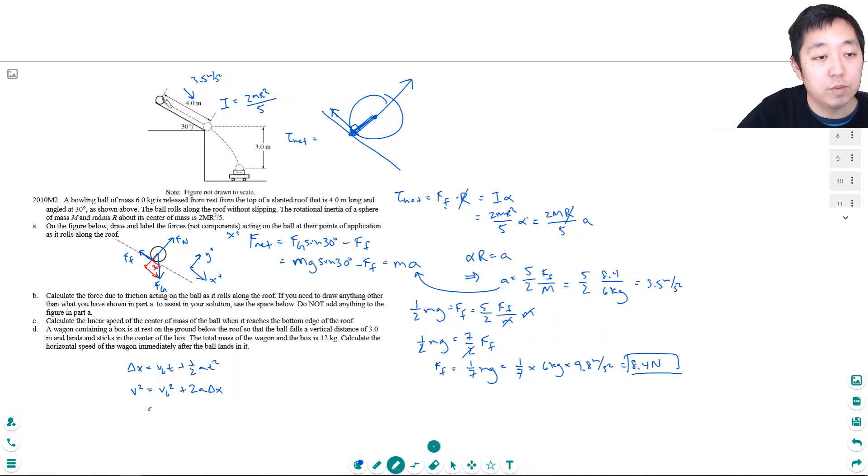2A is 3.5 meters per second squared. And I know it traveled a distance of 4 meters. So, that's equal to V squared. So, V is just equal to the square root of 2 times 3.5 times 4. I get 5.29 meters per second.